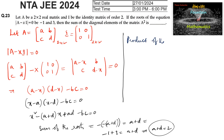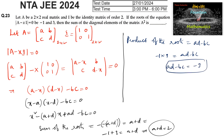The product of the roots in the equation equals ad − bc. So −1 × 3 = ad − bc, giving ad − bc = −3. Now we need to find the sum of the diagonal elements of A².